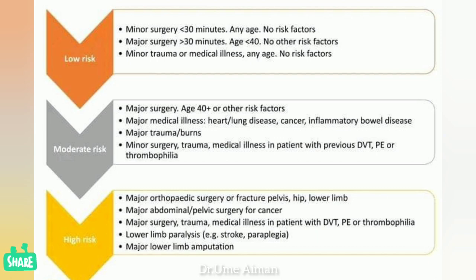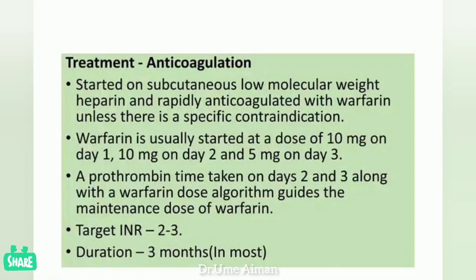High risk classification includes: major orthopedic surgery or fracture of the pelvis, hip, or lower limb; major abdominal or pelvic surgery for cancer; major surgery, trauma, or medical illness in patients with previous DVT, pulmonary embolism, or thrombophilia; lower limb paralysis such as stroke or paraplegia; and major lower limb amputation.